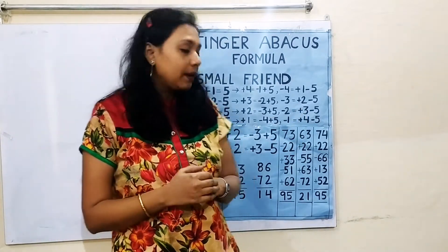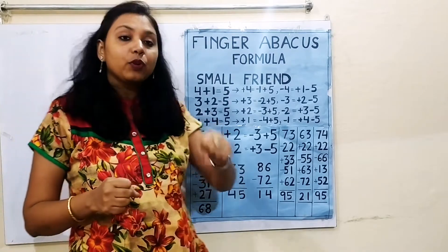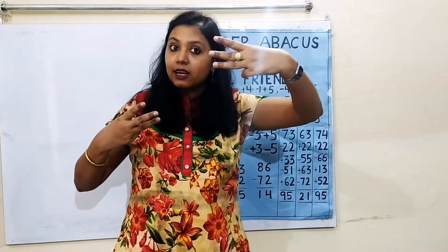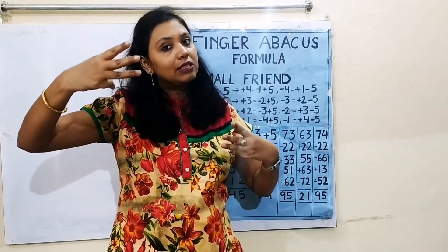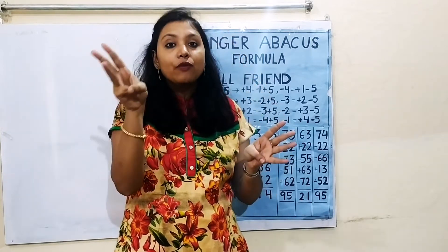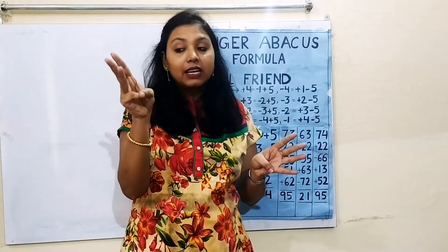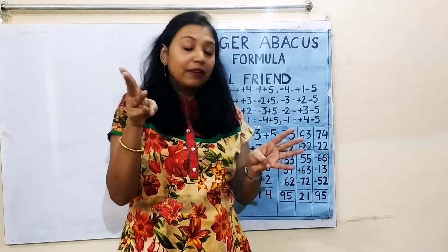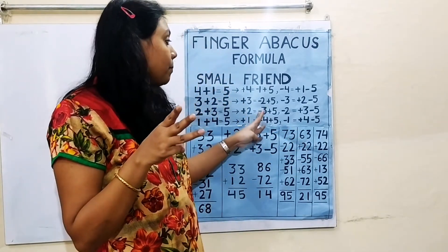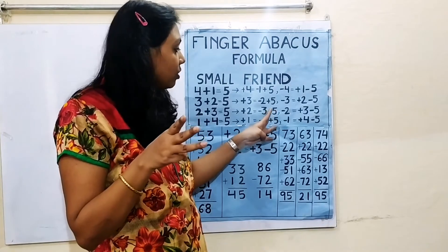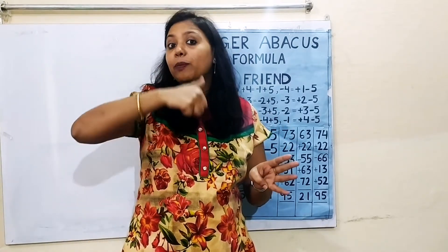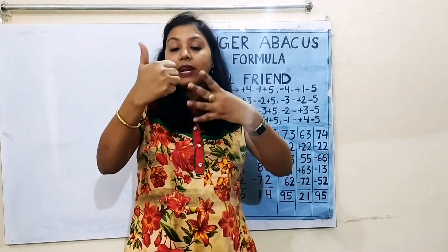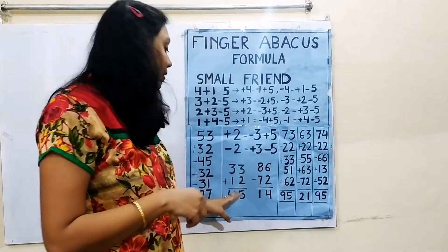Let us do it with an example: 33 plus 12. We have to add 1 in the tens place and 2 in the ones place. After adding 1, we now have to add 2. But we don't have fingers available. So we use the formula: minus 3 plus 5 — close 3 fingers and open the thumb, because the thumb has value 5. The answer is 45.